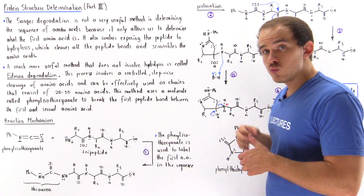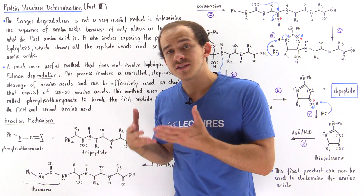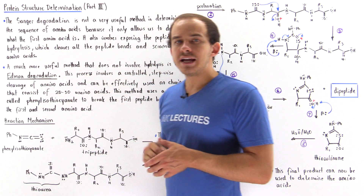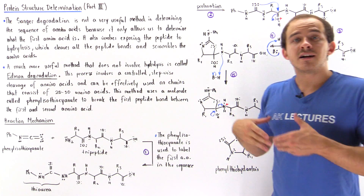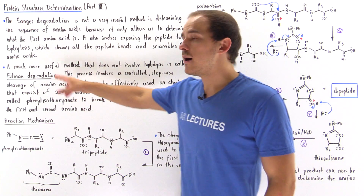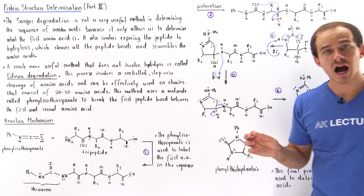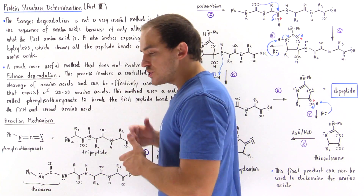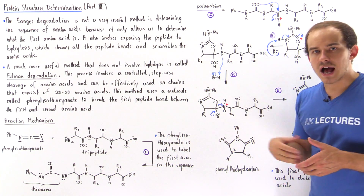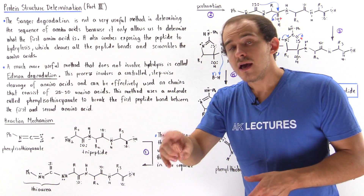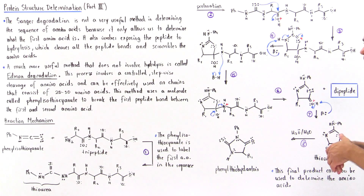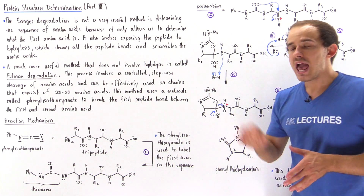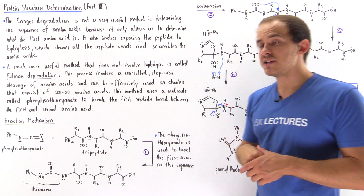A much more useful procedure, in which we do not have a hydrolysis reaction — meaning the protein is not broken down into its constituent amino acids — is known as the Edman degradation. This process involves a controlled stepwise cleavage of amino acids and can be used effectively on peptides that consist of 20 to 30 amino acids in length. This method uses a molecule known as phenylisothiocyanate to break the first peptide bond between amino acid number one and amino acid number two.